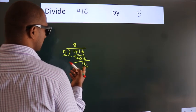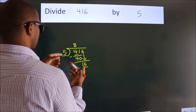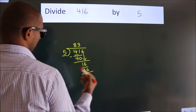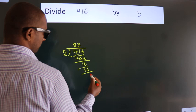A number close to 16 in the 5 times table is 5 times 3 equals 15. Now we subtract. We get 1.